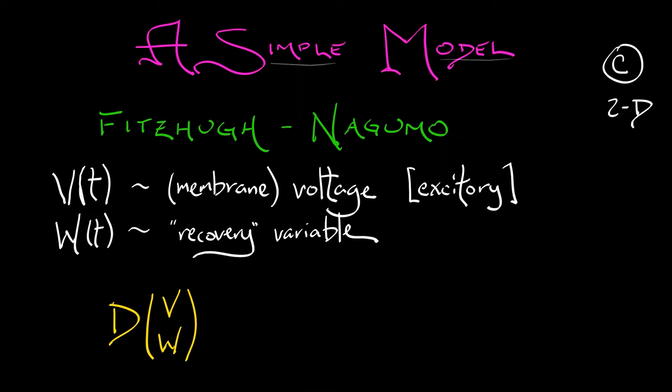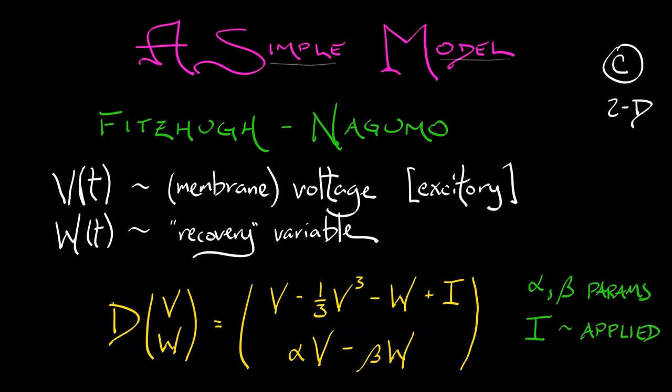The model is as follows. The time derivative of V and W are given by the following. dV/dt is V minus one-third V cubed minus W plus I. And then dW/dt is alpha V minus beta W, where alpha and beta are parameters. And I, again, is another parameter that has to do with sort of an applied voltage, something like that.